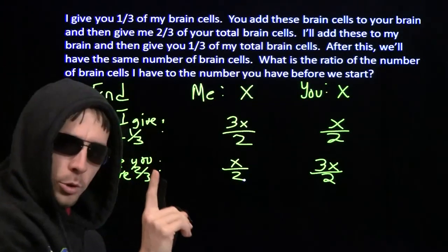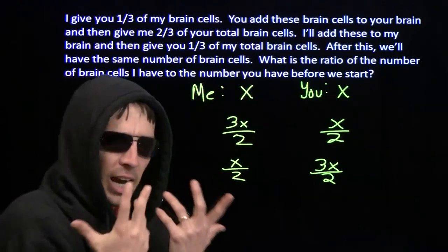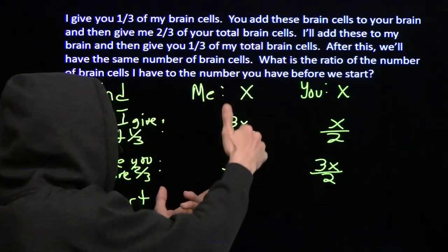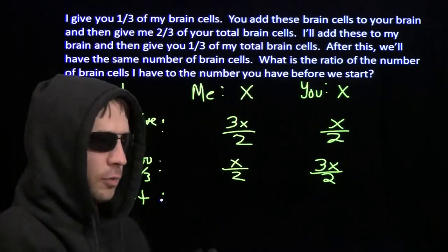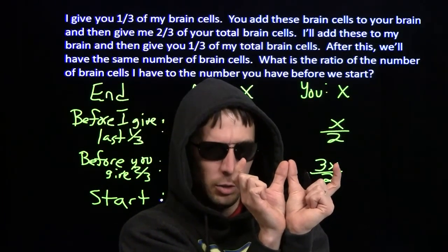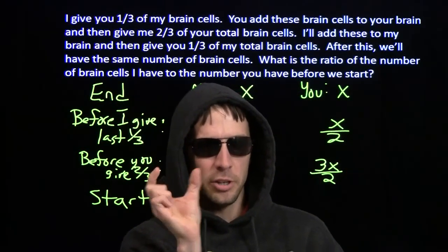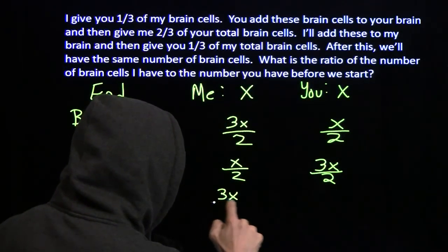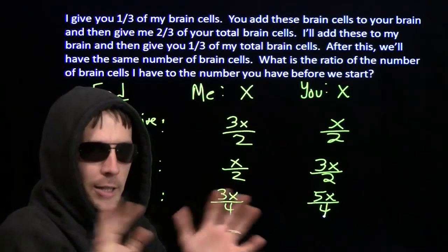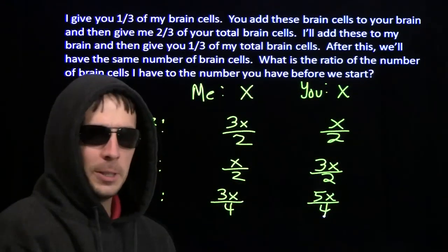One more step to go — figure out what's going on at the start. I had X/2 left after giving you a third of my brain cells. I can think of that X/2 as X/4 plus X/4 — those two together make X/2 — and there's that other X/4 that I gave to you. So I had 3X/4 to begin with, and you must have had 5X/4, because these two have to add up to 2X. I had 3X/4, gave you X/4, and dropped down to X/2. And you went up to 3X/2.